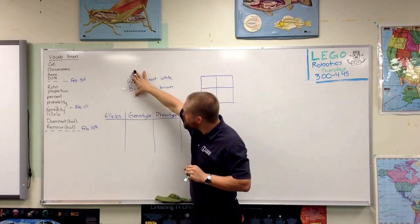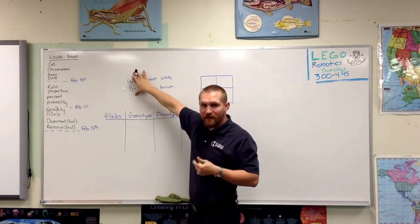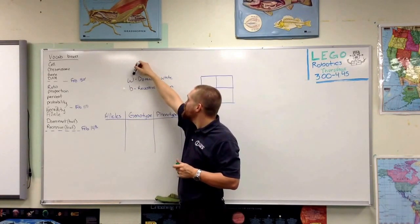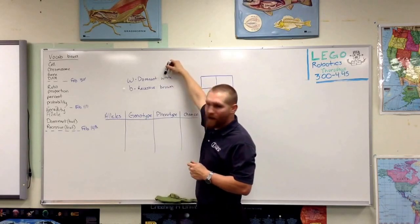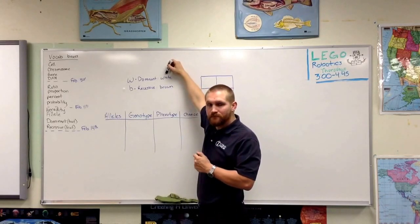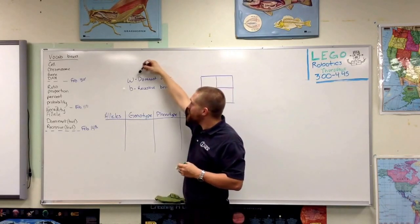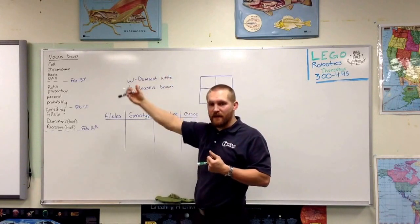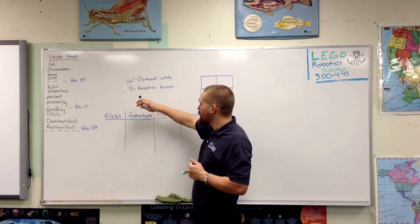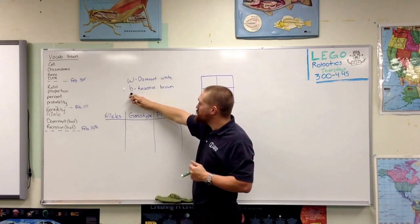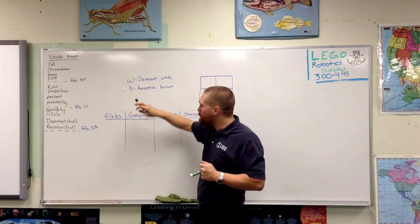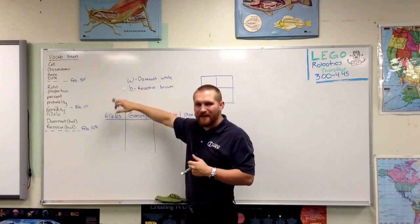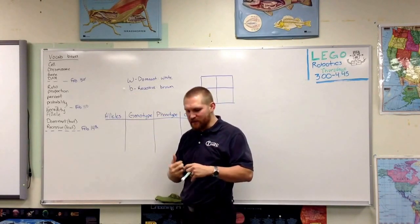We use letters to represent alleles. In this case, I'm going to use a capital W for white fur because the white fur allele is dominant, and a lowercase b for brown fur because the brown allele is recessive.